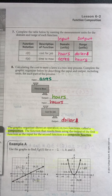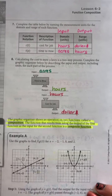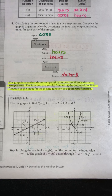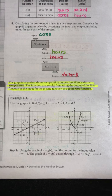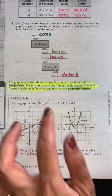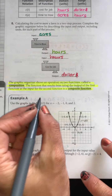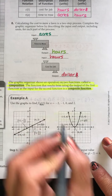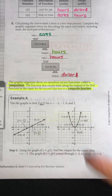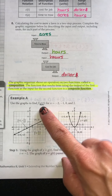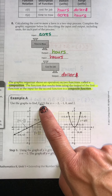We do this algebraically and also graphically. In Example A, use the graphs to find f of g of t for x equals negative two, negative one, zero, and two. Whenever you see this notation, it's function notation, and you always work from the inside out. So let's start with an x value of negative two. We're going to plug negative two into g of t, so we evaluate g of negative two.